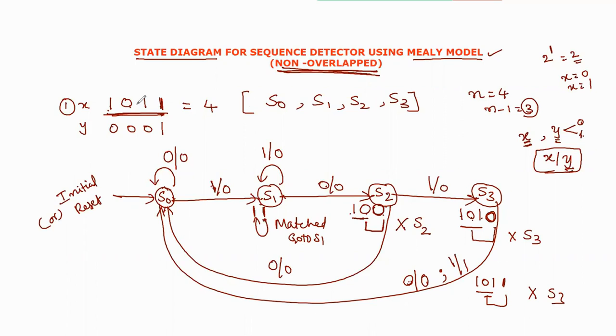This is the state diagram for the 1011 sequence. This is using the non-overlapped condition and the Mealy model.